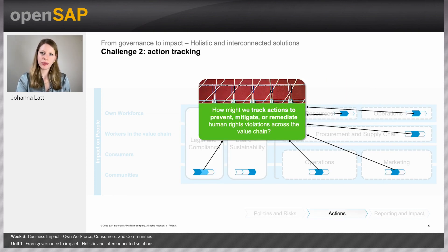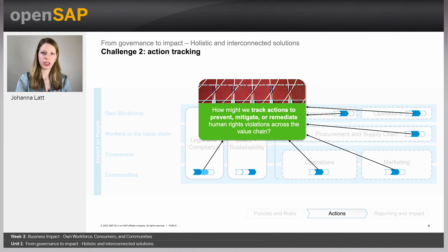The second challenge is about tracking actions to prevent, mitigate, or remediate human rights violations across the value chain. Actions come out of the risk assessment on corporate level but are carried out by the LOBs. These actions need to be tracked across the full value chain and reported back on corporate level. Furthermore, they need to be auditable, and businesses want insights into each action's progress. Elaborate stakeholder collaboration — both internal and external — is essential, something businesses often need IT to support.